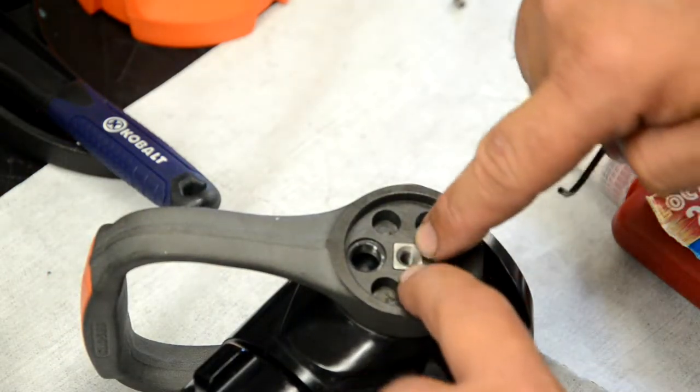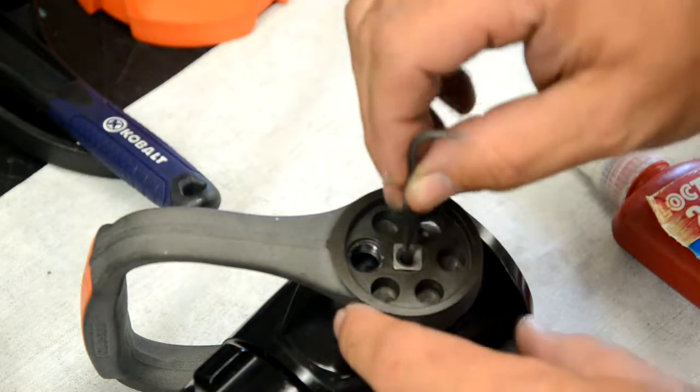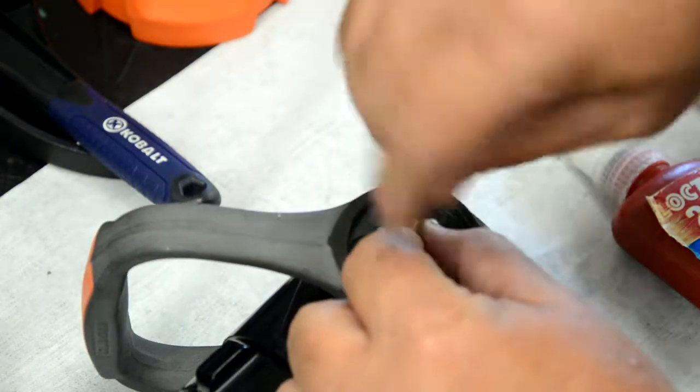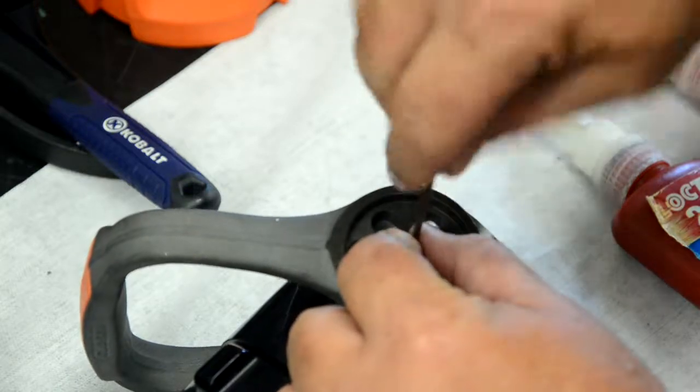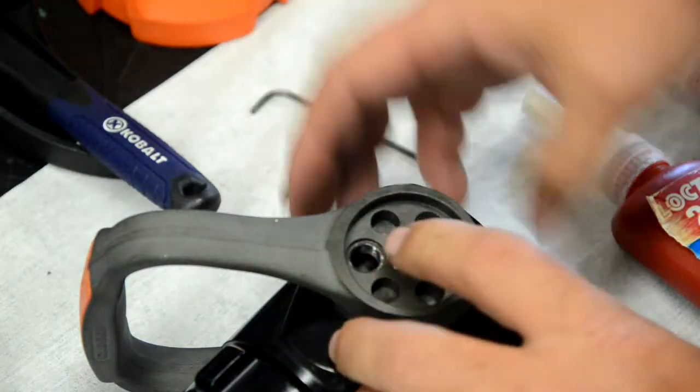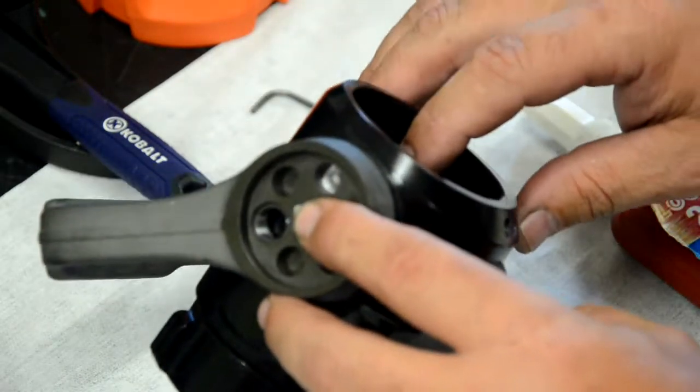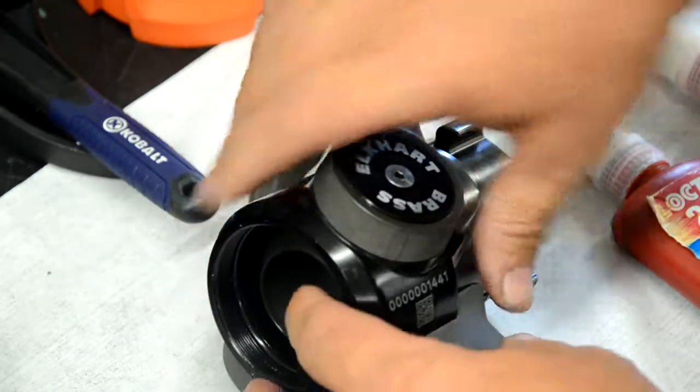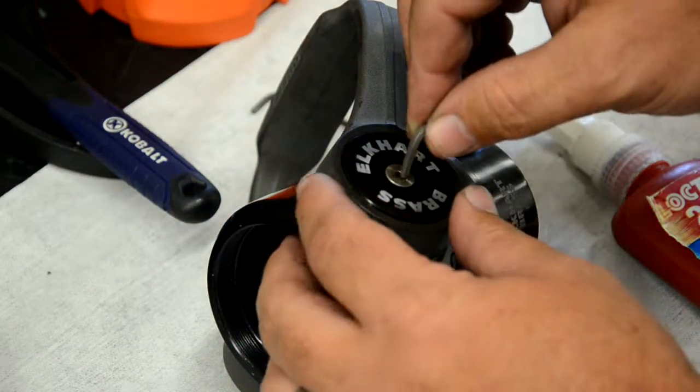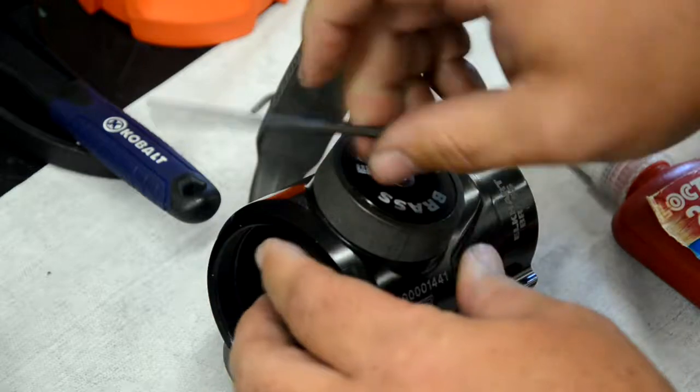Using the small 3/32nds allen wrench, loosen the dog point set screw so that it disengages from the ball valve. Note, the dog point set screw will not back all the way out of the actuator shaft. It's a part of it itself. We're just going to back it out far enough so that it's free from the ball valve. Then, we're going to repeat this process on the other side.